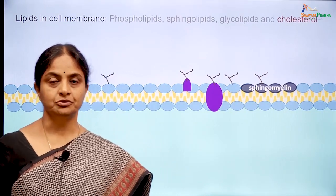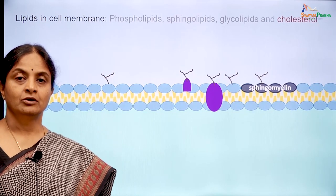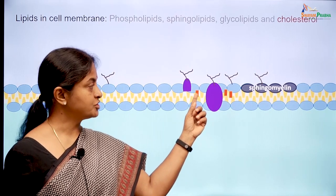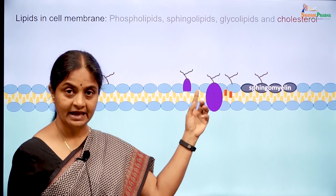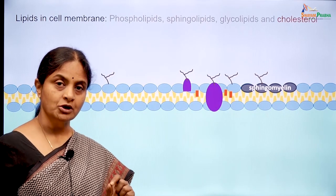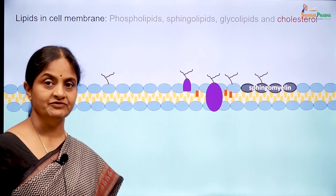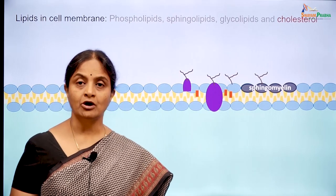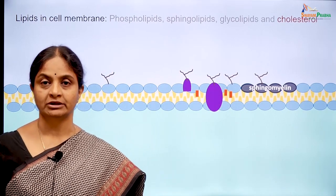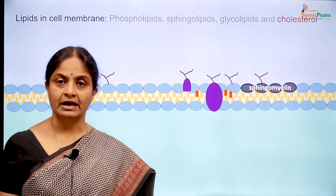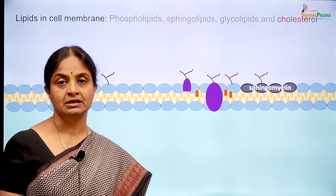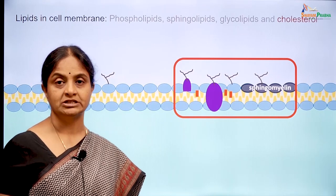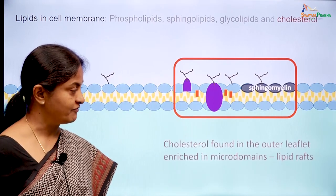Let us now move on to cholesterol in the cell membrane. Cholesterol is also an amphipathic molecule with a hydroxyl group in the region of the hydrophilic heads of the other phospholipids. Cholesterol is also found only on the outer leaflet like sphingomyelin. Both cholesterol and sphingomyelin are not homogenously distributed along the outer leaflet — they are enriched in certain special regions referred to as lipid rafts.